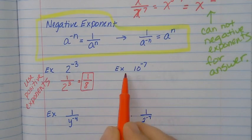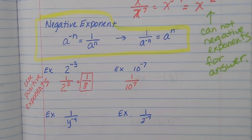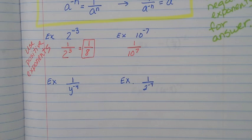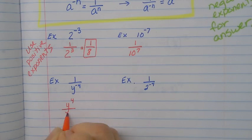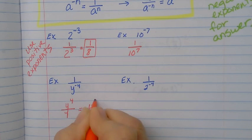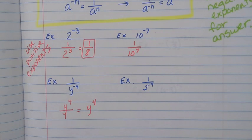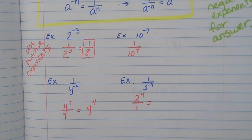Ten to the negative seven is going to be one over ten to the seventh power. I'm not going to expand that one because it's going to be pretty large. Then here, one over y to the negative four — to get rid of that negative four exponent we do the reciprocal and change it to positive, so that's just y to the positive four. And then one over two to the negative four: do the reciprocal, and two to the fourth power is sixteen.